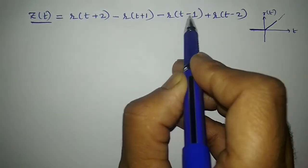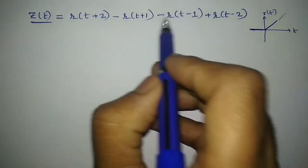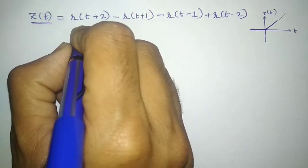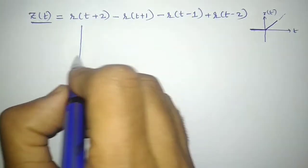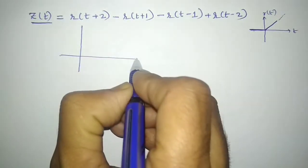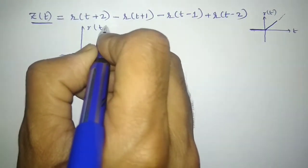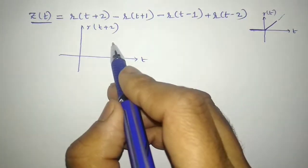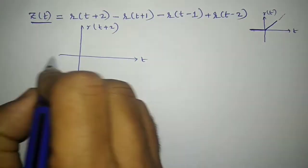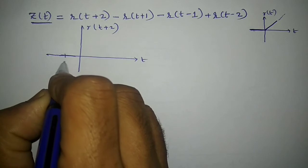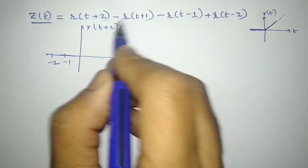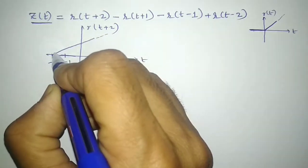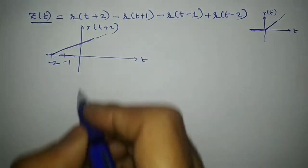So sketch these 4 signals individually then add them up so that I would get Z. To start with, let me sketch the very first signal that is R(t+2). This is the y-axis and this will be the x-axis. R(t+2) is the shifted version of R, shifted to the left by 2. So this is where the signal is shifted to and the shape would remain the same. This is how the signal looks like.